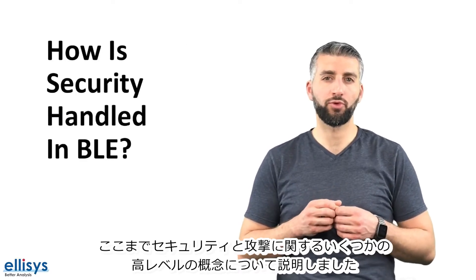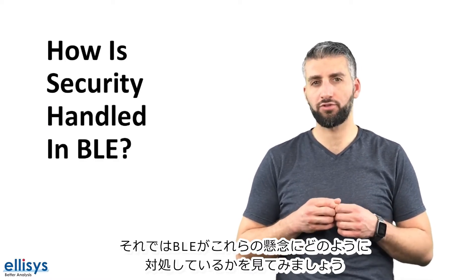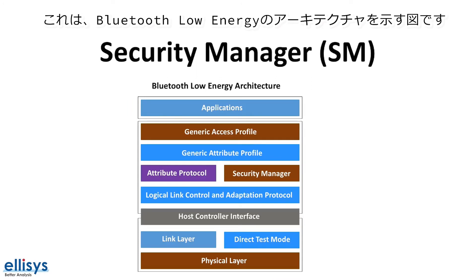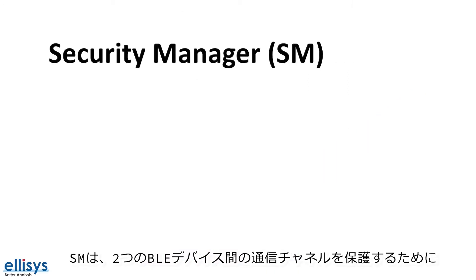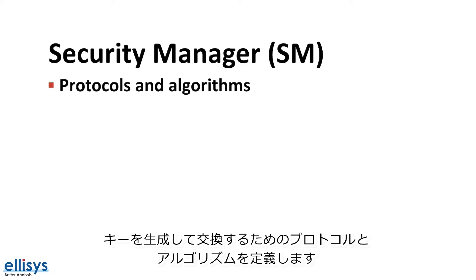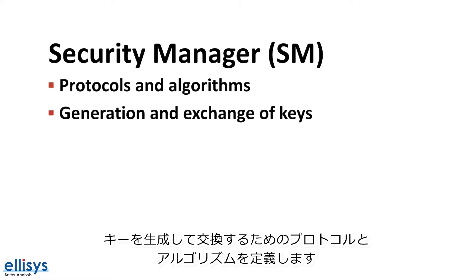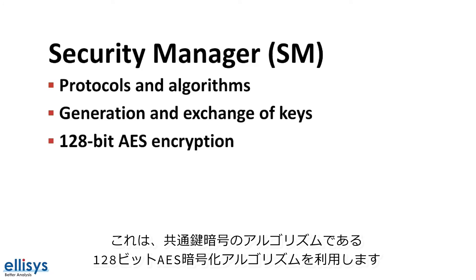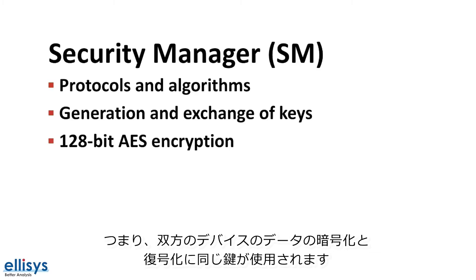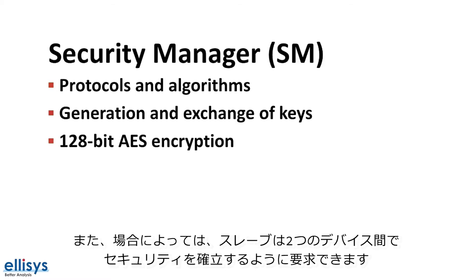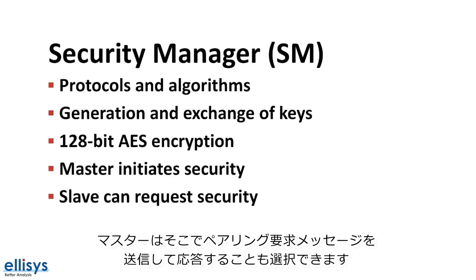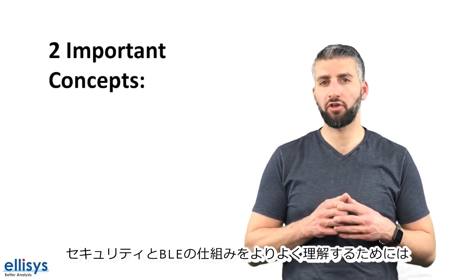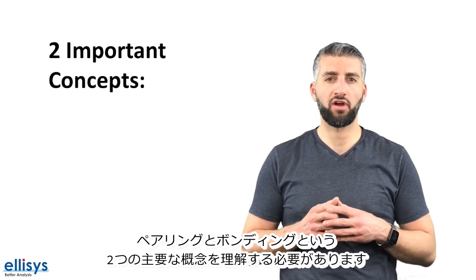Now that we've covered some high-level concepts regarding security and attacks, let's look at how BLE addresses these concerns. Here's a diagram showing the architecture of Bluetooth Low Energy. The module responsible for security is the Security Manager, or SM. The Security Manager defines the protocols and algorithms used for generating and exchanging keys to secure the communication channel between two BLE devices. It utilizes the 128-bit AES encryption algorithm, which is a symmetric key algorithm — meaning the same key is used to encrypt and decrypt data on both sides. Security is always initiated by the master, which sends a pairing request to the slave, though the slave can also request security to be established.